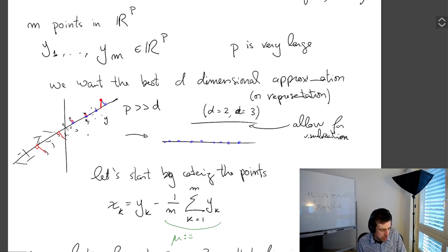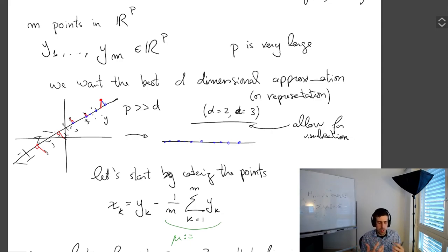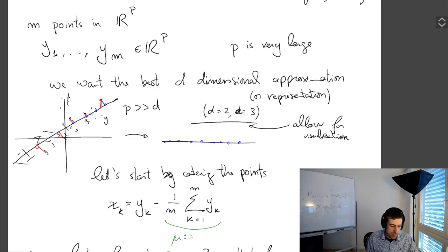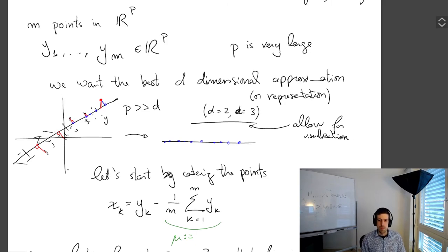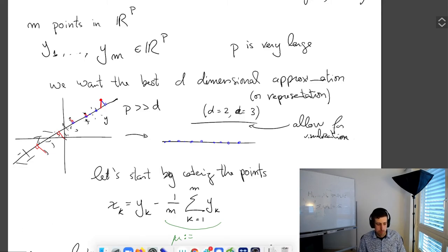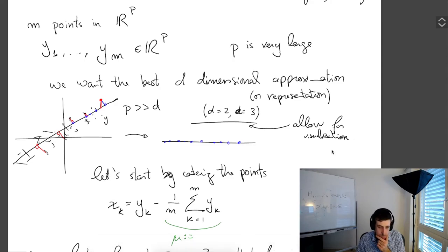Linear regression is something in the world of supervised learning or statistical estimation, while PCA is unsupervised. It's unfortunate I can only draw in so few dimensions so they look a lot more similar than they really are. But if you start putting points very close to the axis, you can't even make sense of linear regression then.